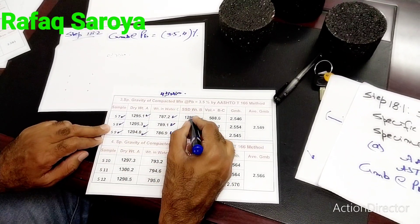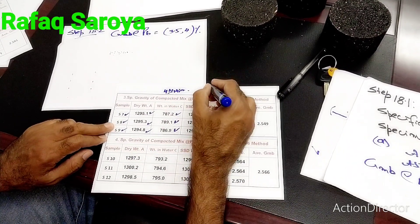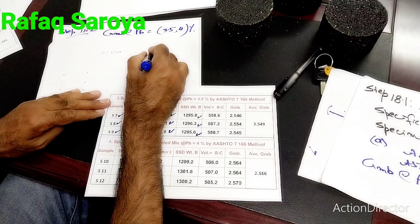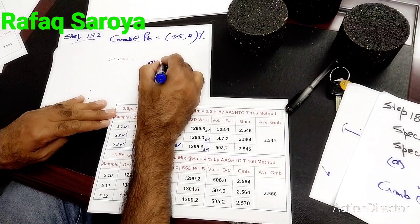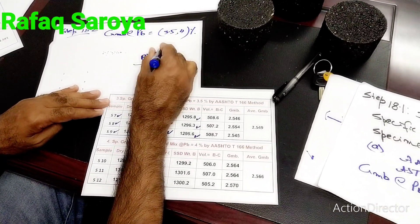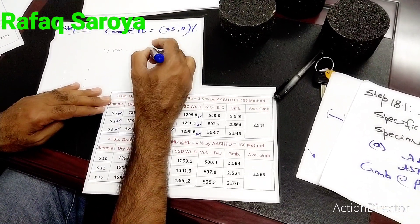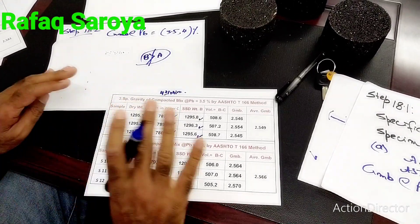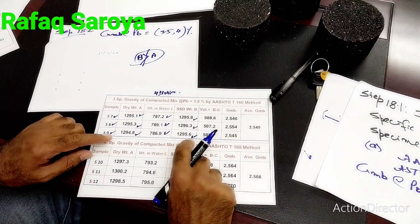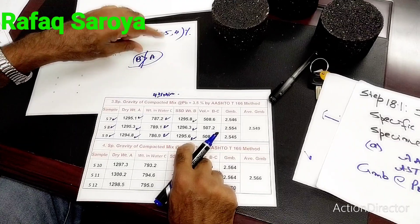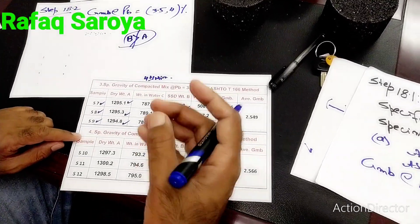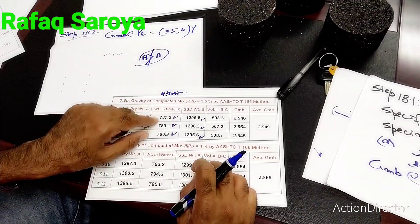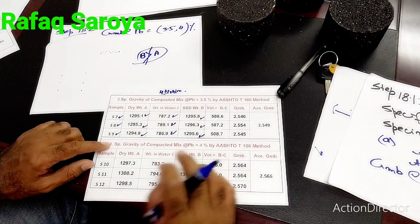Mark my word — the SSD weight, represented by B, should always be greater than A (the dry weight). If this condition is not satisfied, something is wrong. Also, when anything is immersed in water it loses weight, which is why the weight in water is less than A.